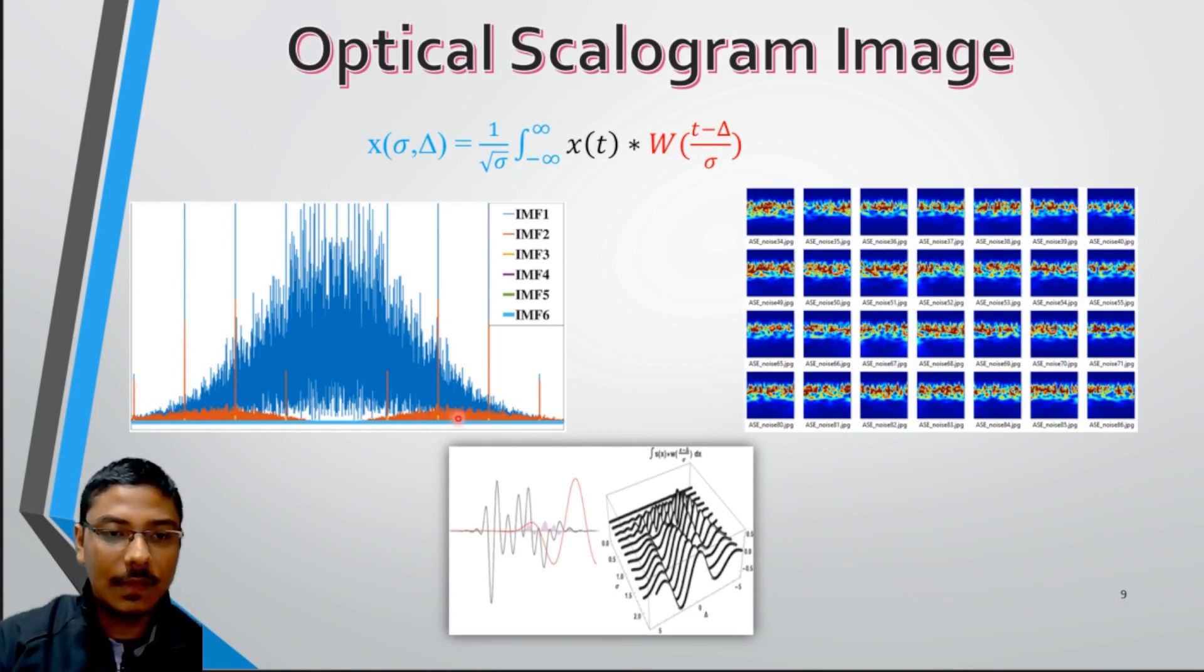We clearly see after the VMD, these are the modes: IMF1, IMF2, 3 and 4. In IMF1, most of the message signal with some noise signals are there. In IMF2 to IMF6, there are all the noise signals coming.